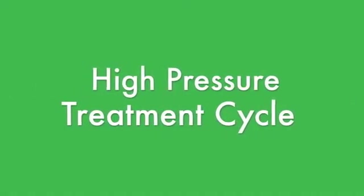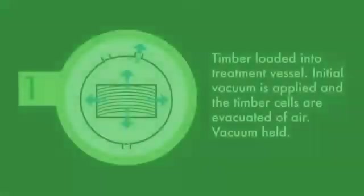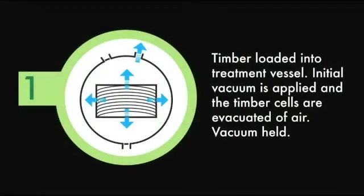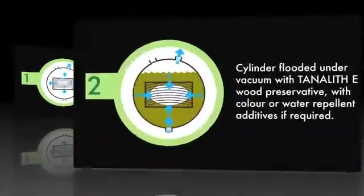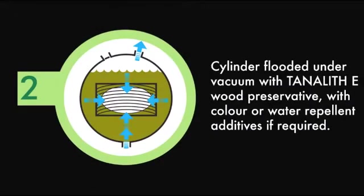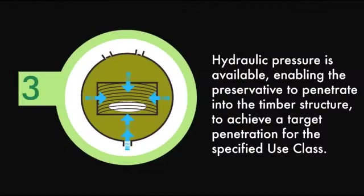A typical treatment cycle will involve the following process stages. Once the timber is loaded within the secured vessel, an initial vacuum is applied which evacuates air from the cells of the timber. The cylinder is then flooded under vacuum with a wood preservative. Hydraulic pressure is then applied, allowing the preservative to penetrate into the timber structure to achieve a target penetration that is suitable for the eventual end use of the timber.